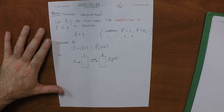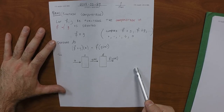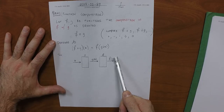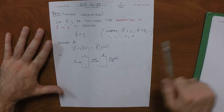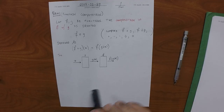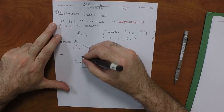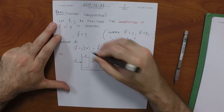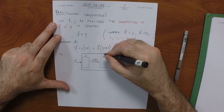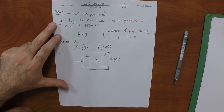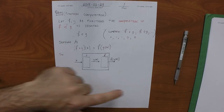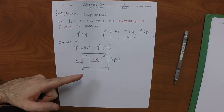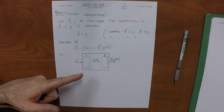Suppose that we have this assembly line: X becomes G of X, becomes F of G of X. Supposing someone said it's too loud and asked us to build a box around it to control the noise. We build a box around it, and we can no longer see the inside. We just put X's in on the left and watch F of G of X come out on the right. The name of this box is F∘G.